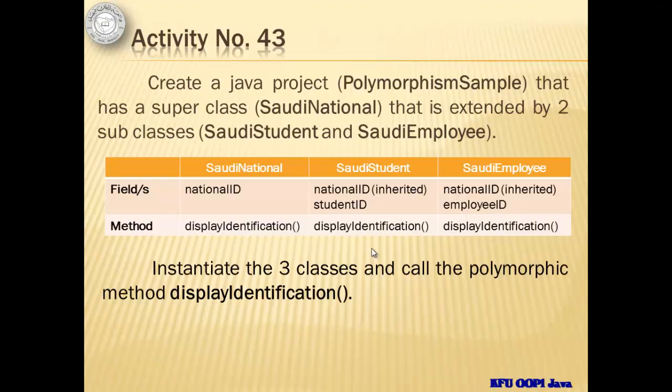In activity number 43, we will create a Java project called PolymorphismSample that has a superclass called SaudiNational, extended by two subclasses: SaudiStudent and SaudiEmployee. SaudiNational has one field, NationalID, which will be inherited by both subclasses. SaudiStudent has a unique field StudentID while SaudiEmployee has EmployeeID. The sole method of SaudiNational, displayIdentification, will be overridden in both subclasses — this is the polymorphic method.